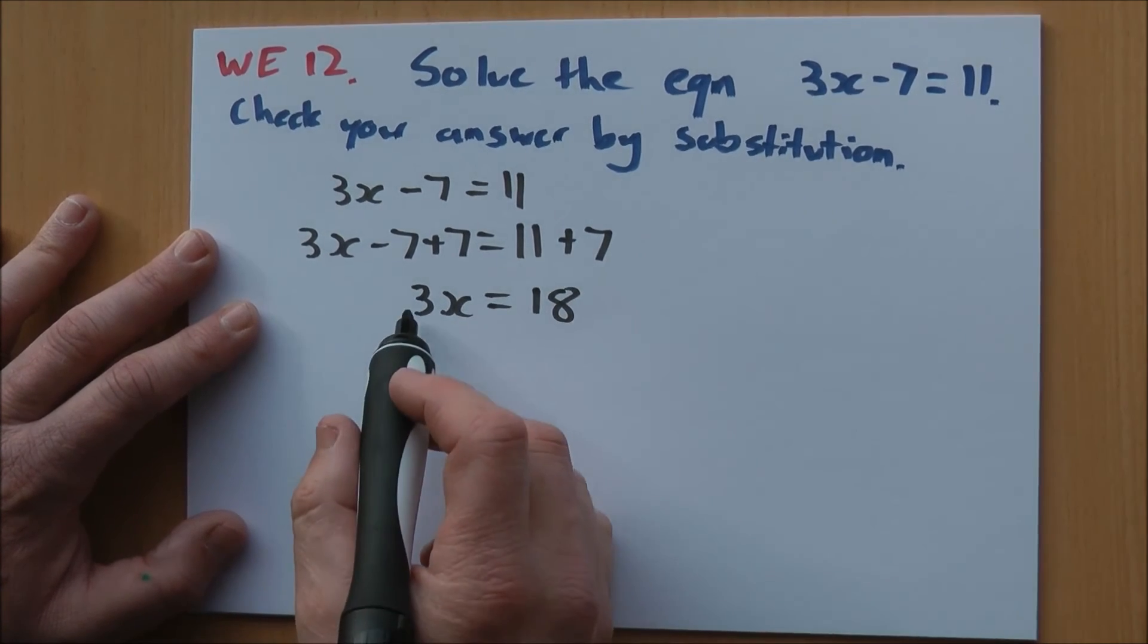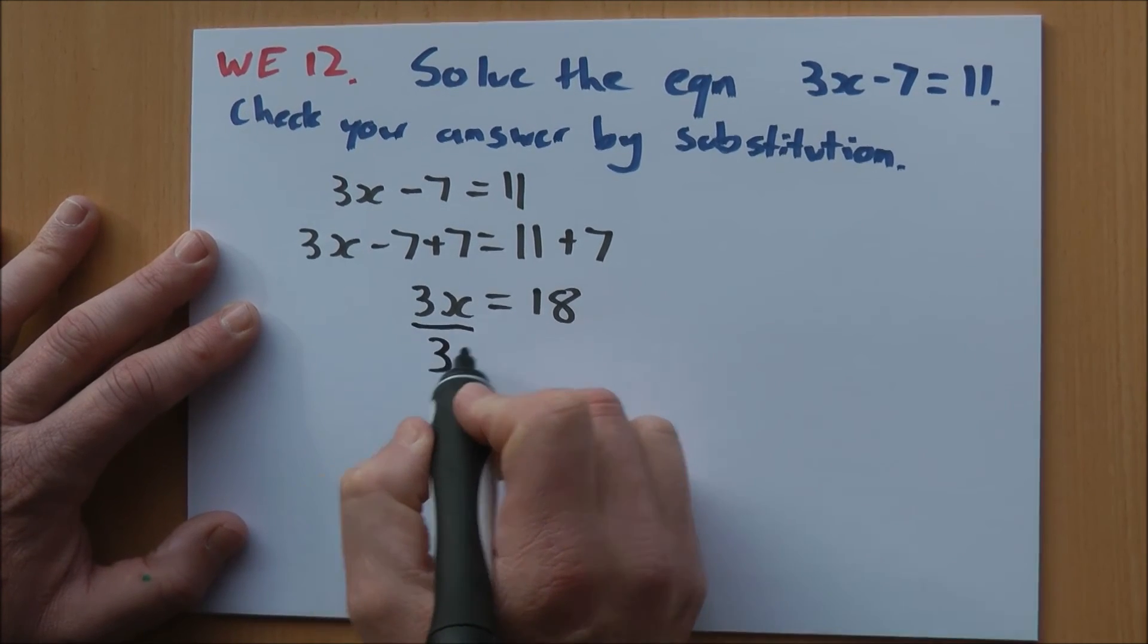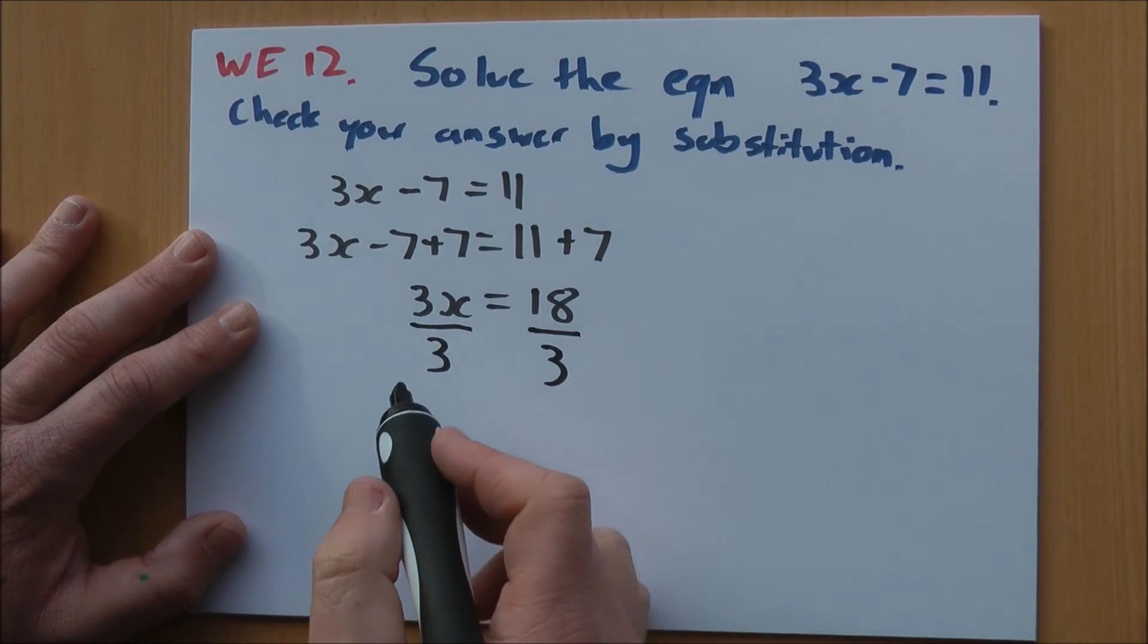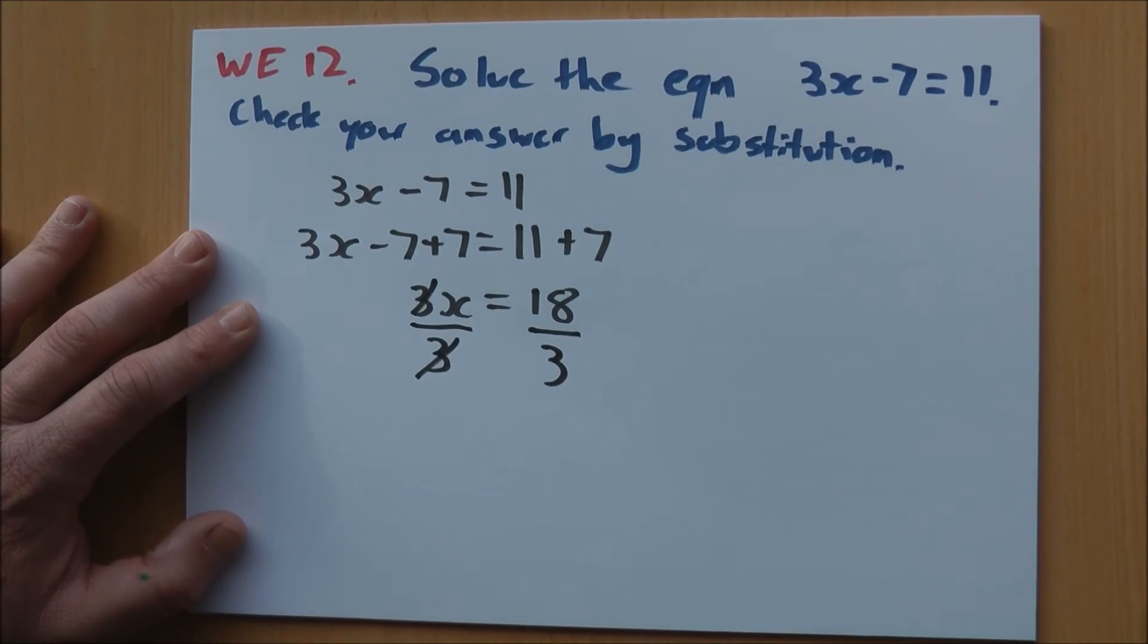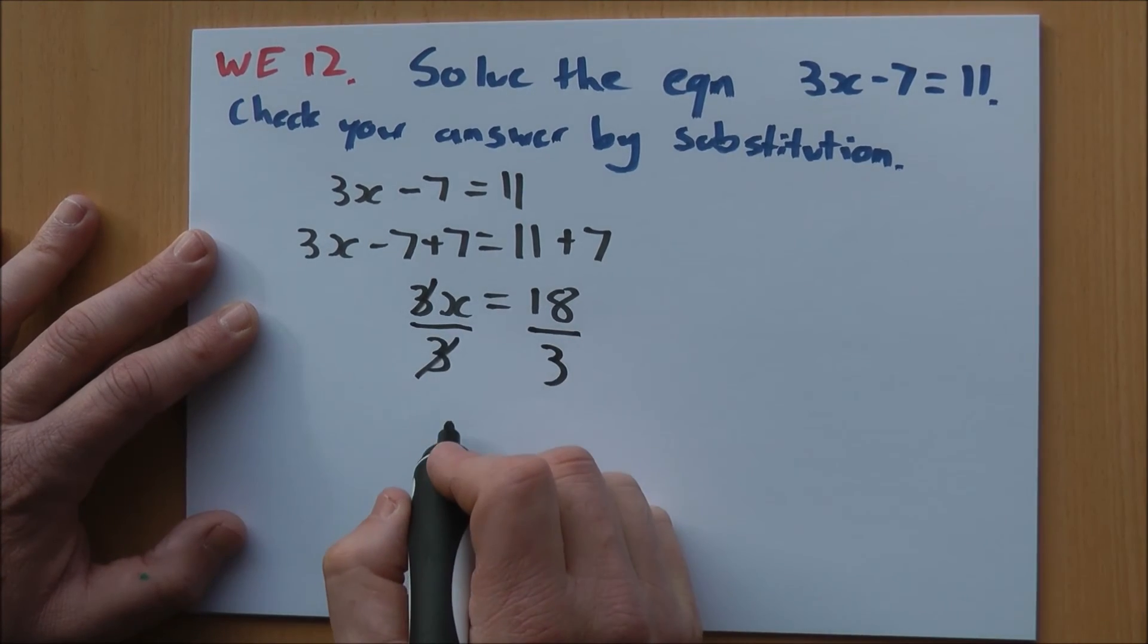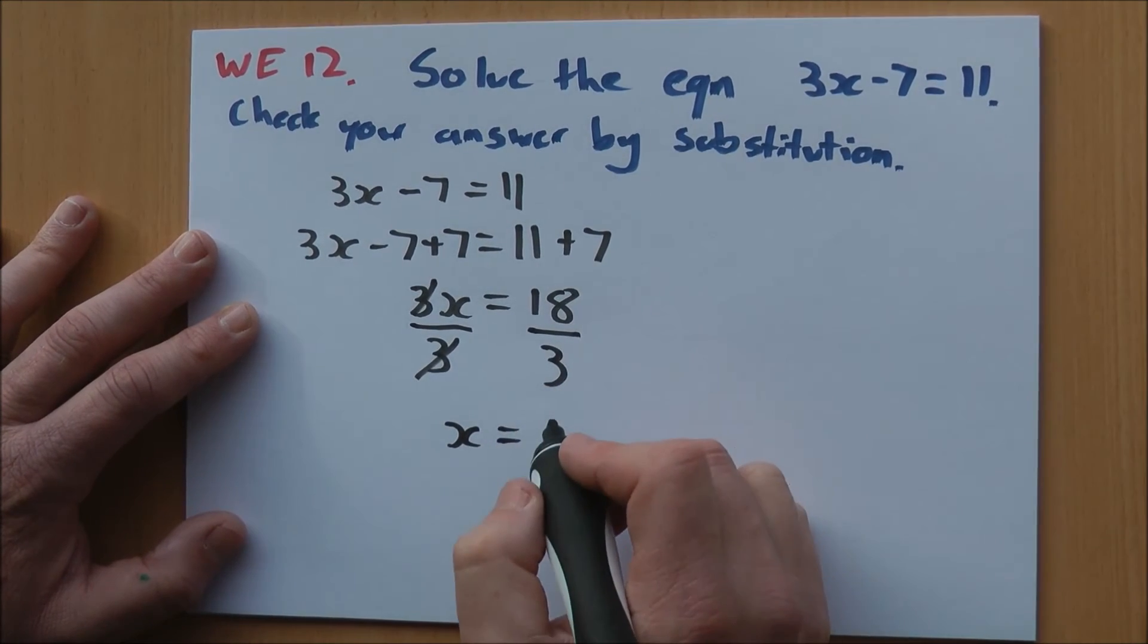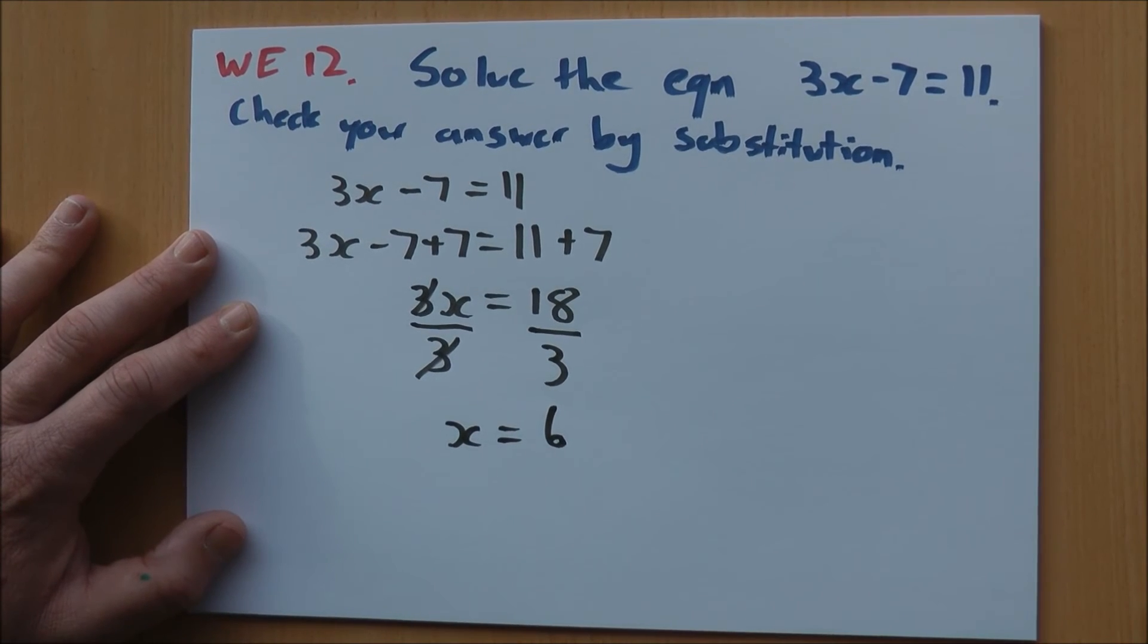Now I've got a 3 times my x. The inverse of times is divide. So I'm going to divide by 3 to both sides. Now, 3 divided by 3 is going to cancel out because 3 divided by 3 is 1. It's just 1x, which is just my x. 18 divided by 3, how many times does 3 go into 18? 6 times. So x equals 6 is my solution.